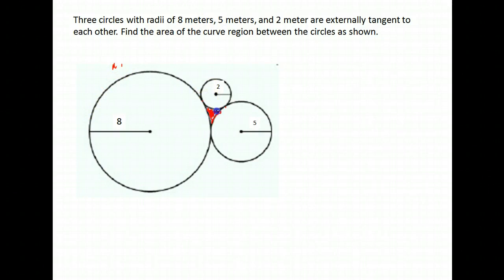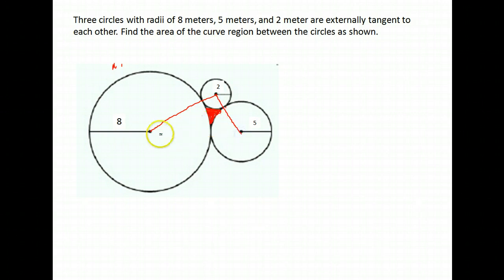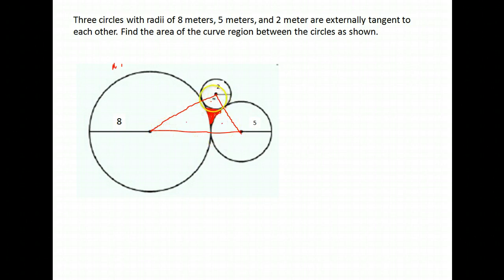There's probably more than one way to do this. I'm going to show you one way: the first thing I'm going to do is create a triangle by connecting the centers of my circles. Notice — if I can find the area of this triangle and subtract from it, in each circle I have a sector. So if I can find the area of the complete triangle and subtract the area of those three sectors, the part that's left is the portion they want in the middle.